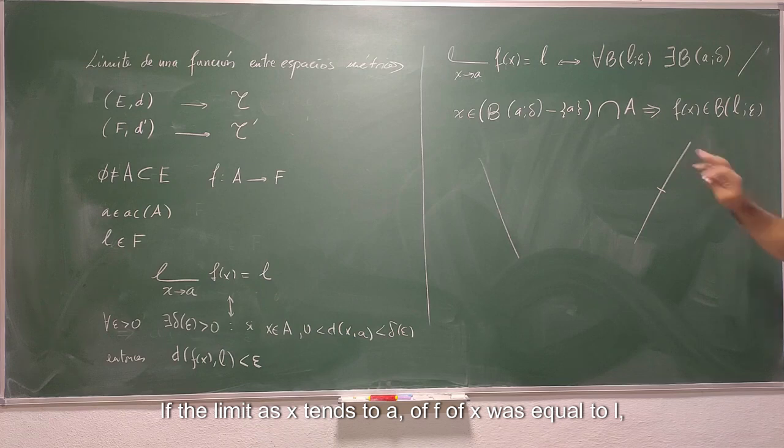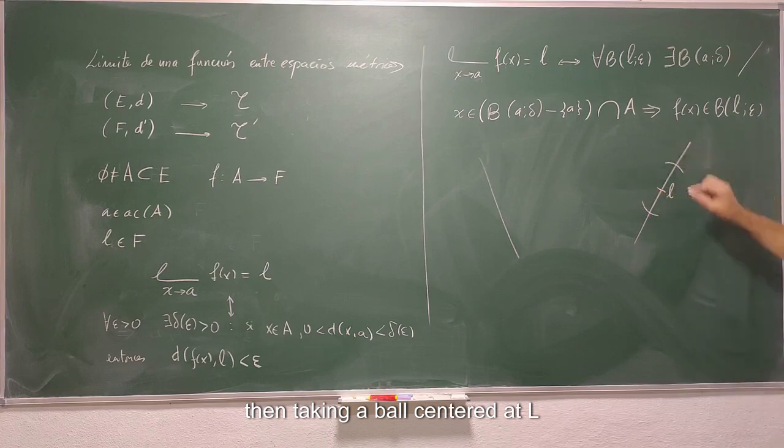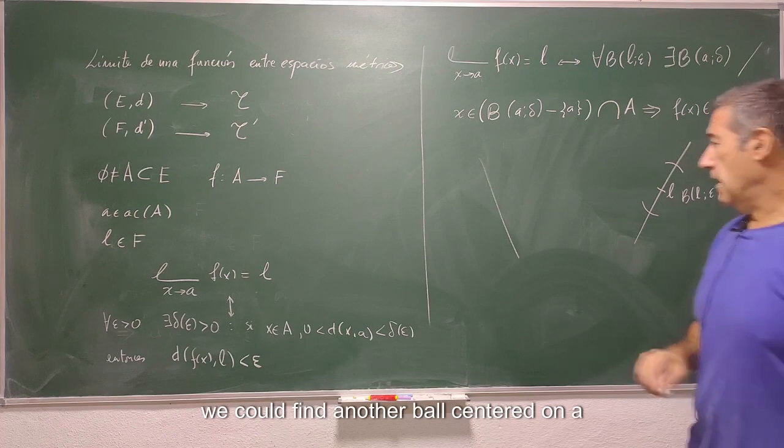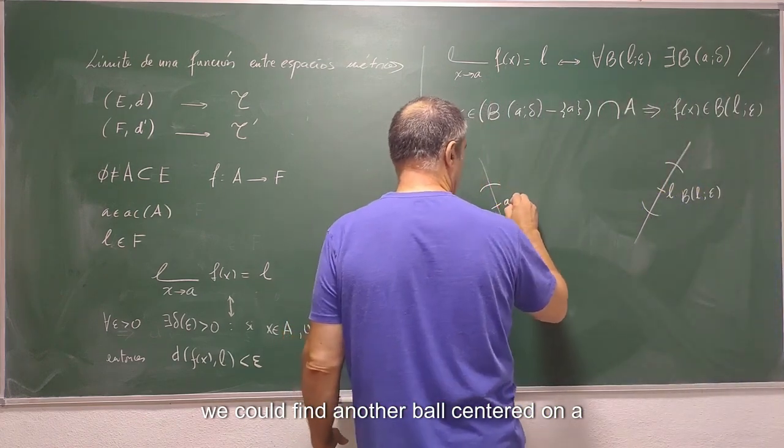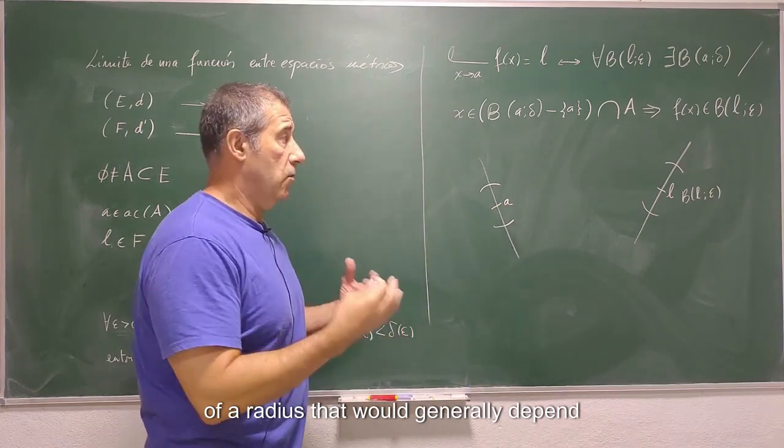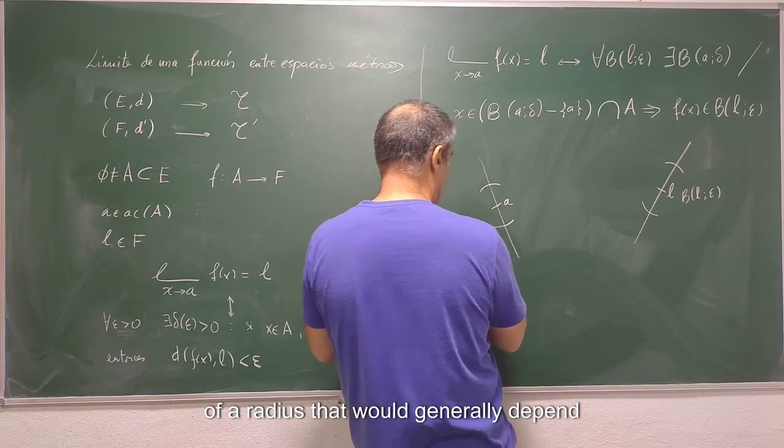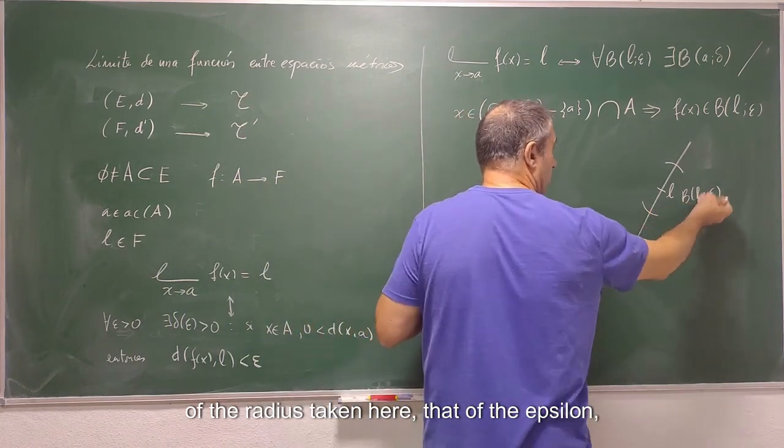If the limit as x tends to a of f of x was equal to L, then taking a ball centered at L of an arbitrary radius epsilon, we could find another ball centered on a of a radius that would generally depend of the radius taken here, that of the epsilon.